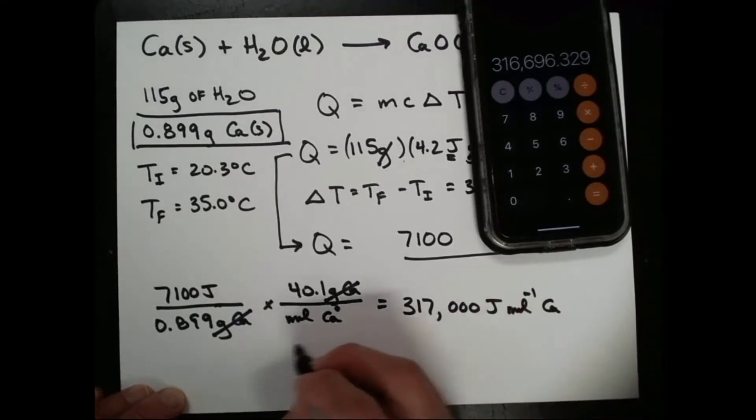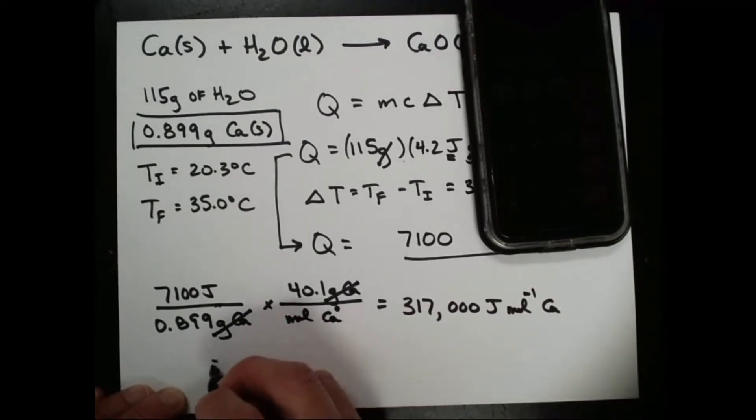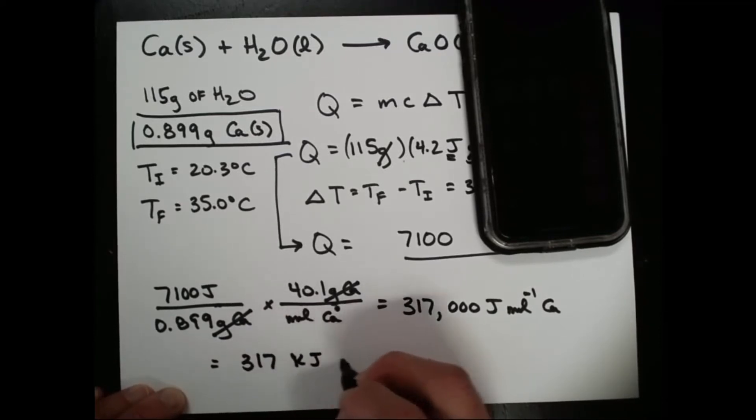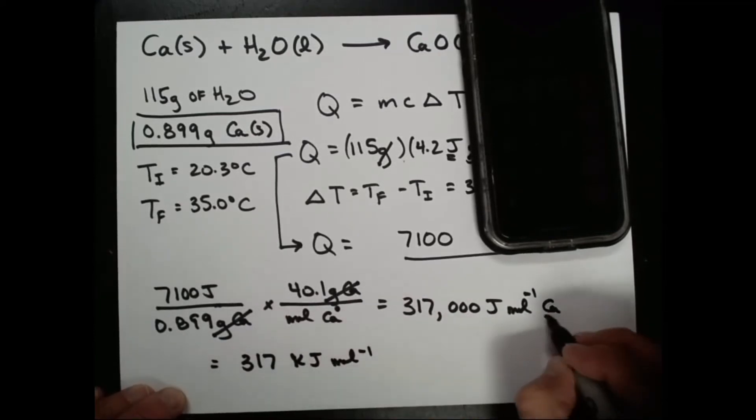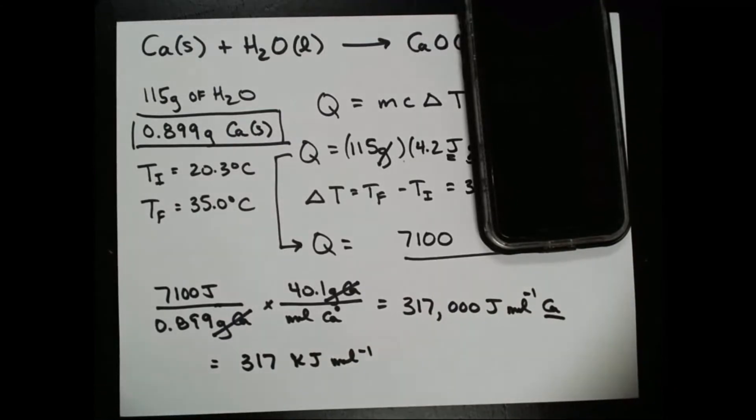Now, of course, we can also convert that to kilojoules per mole just by dividing by 1,000. It's going to be 317 kilojoules per mole for every mole of calcium that reacts.